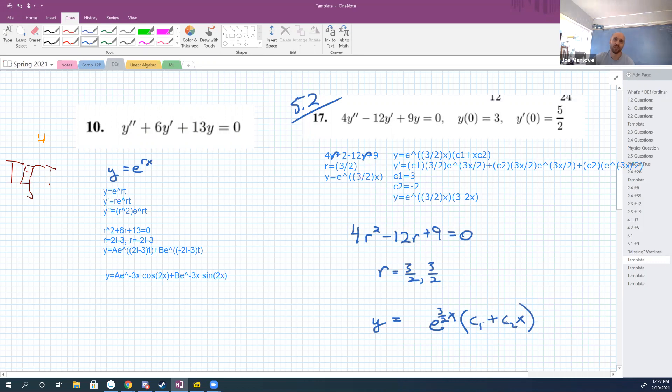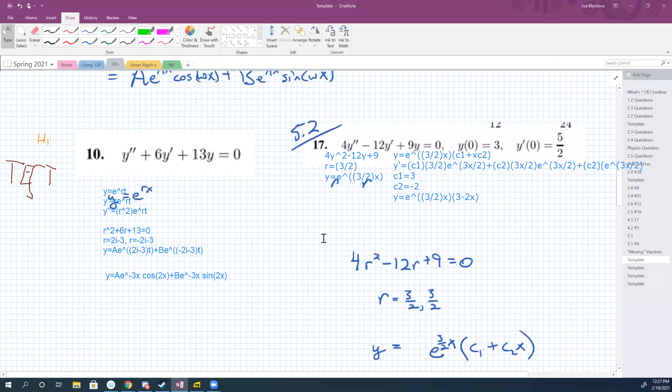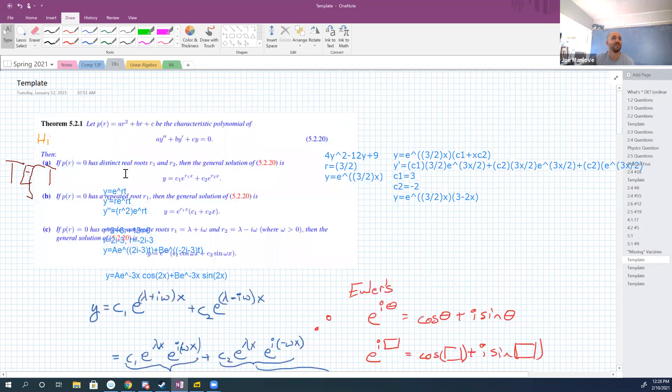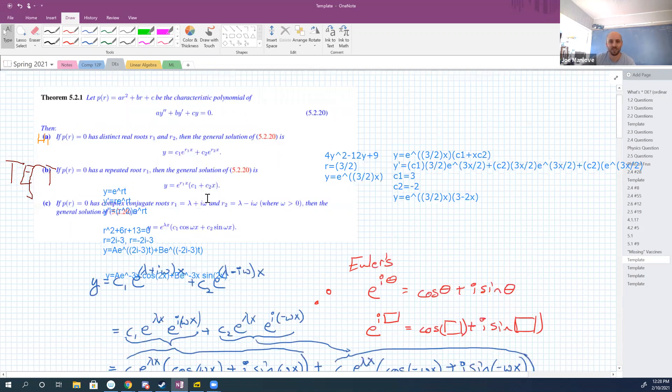Yeah, just c1 plus c2 x. So this is c1 e to the three halves x plus c2 x e to the three halves x. That's just out of theorem 5.2.1, right? We're just in part b, and this is just identically the solution that you get out of that.